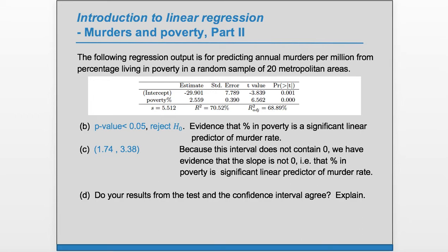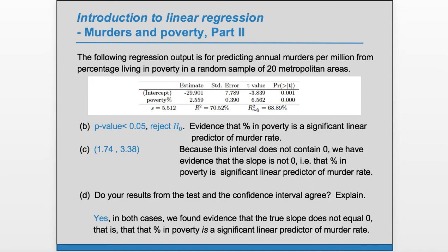Part D: Do your results from the test and the confidence interval agree? Explain. Yes, they agree. In our test, we rejected that beta1 was zero. Our interval comes to the same conclusion - we don't think beta1 is zero because that's outside the interval. Both the test and confidence interval found evidence that the true slope is not zero, that percent in poverty is a significant linear predictor of murder rate.